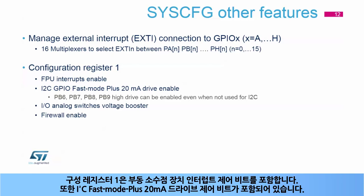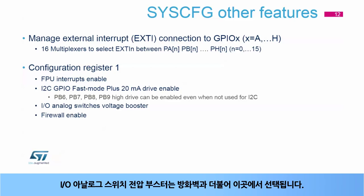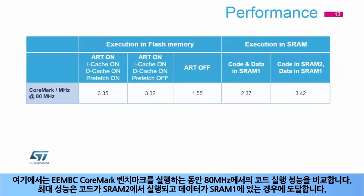Configuration register 1 contains the floating point unit interrupt control bits and the I2C Fast Mode Plus 20mA drive enable control bits. Four IOs can be configured with high drive mode even if they are not used as I2C alternate functions — they can be used to drive LEDs, for instance. The IO analog switch voltage booster is also selected here, as well as the firewall.